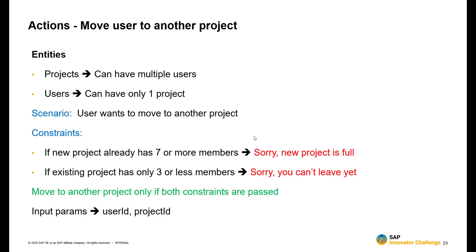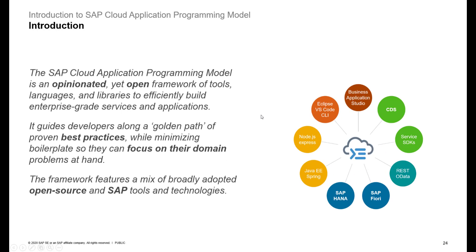So if both these constraints are passed, then we allow the user to move from one project to another. For this, we are going to take two input parameters: we are going to take the user ID, and we are also going to take the project ID of the new project that the user wants to move to. So with this, let's start working on the actions part of it.